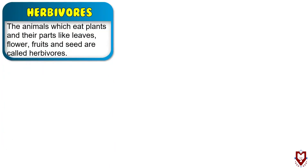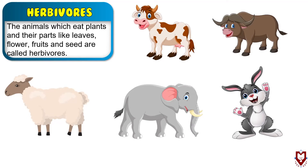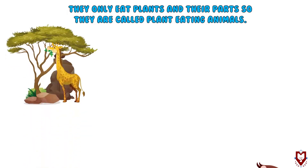First, let's learn about herbivores. The animals which eat plants and their parts like leaves, flowers, fruits, and seeds are called herbivores. Cow, buffalo, sheep, elephant, and rabbits are some examples of herbivores.